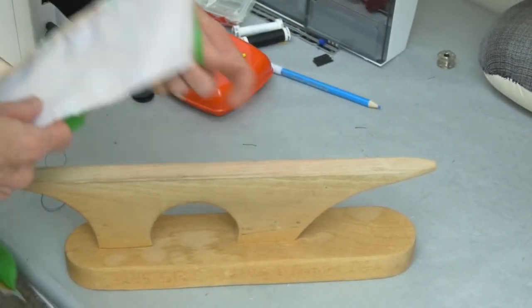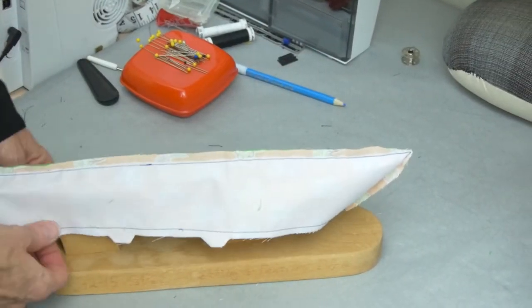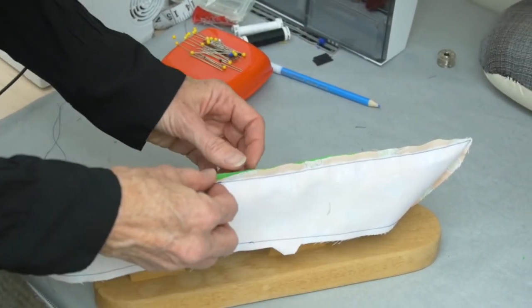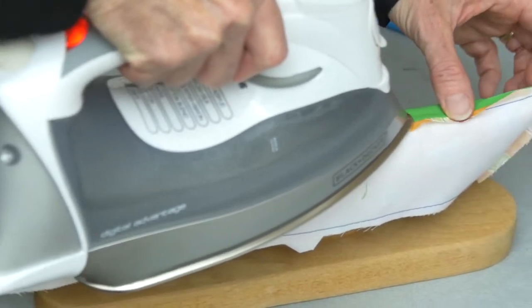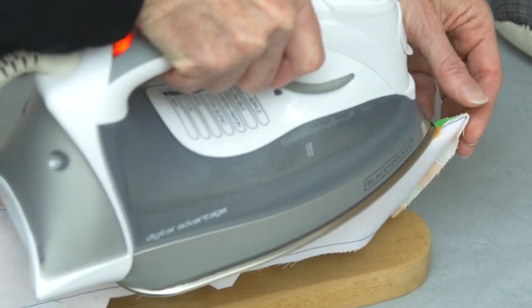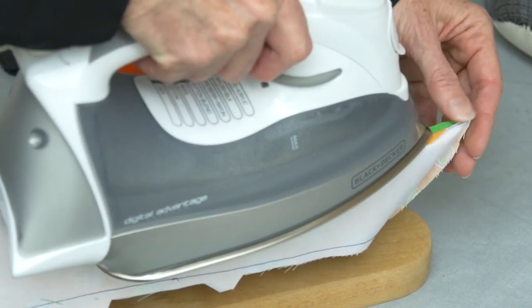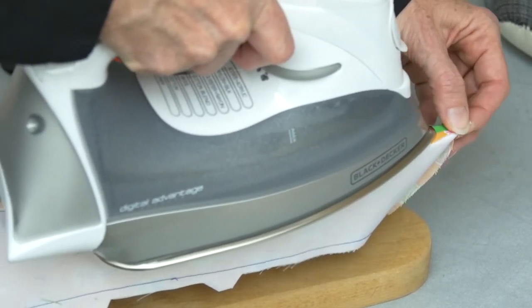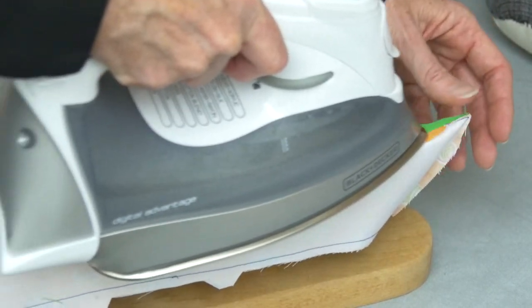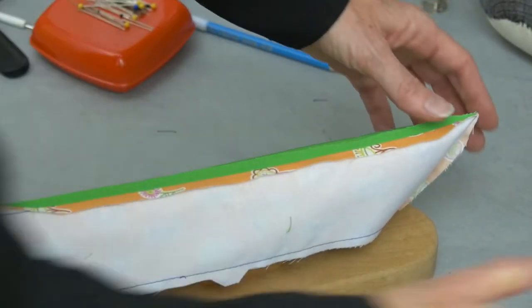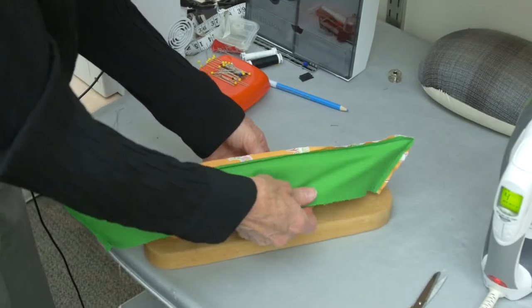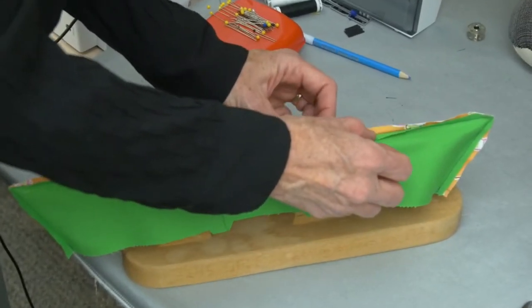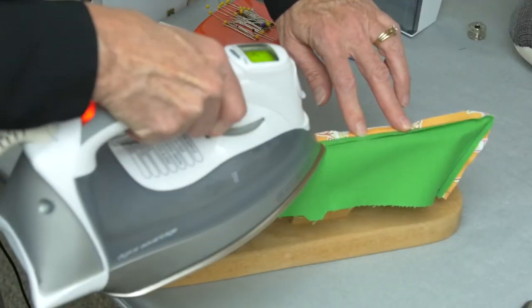We're going to press it on the top of this point presser here, press the tip of the collar and then we're going to press the back collar seam. Before you put it on this point presser you'll press it flat as you sewed it and then you press it open on the point presser. That will help to define that edge for you and embed those stitches in the seam.